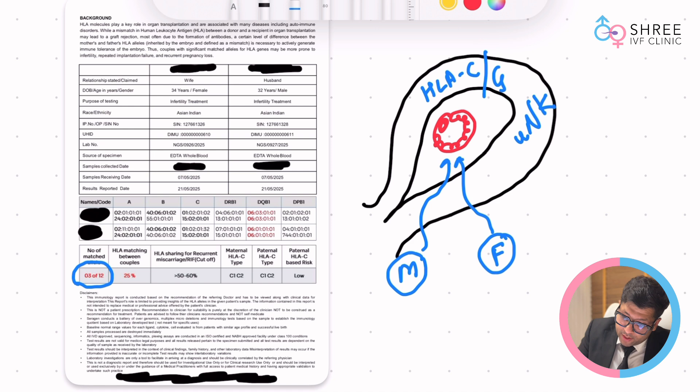Look at this: in HLA B, can you see 46 0102? It matches with 40 060102 below. So that is the first match which we have established as far as this couple is concerned. The second match, if you see, look at this.